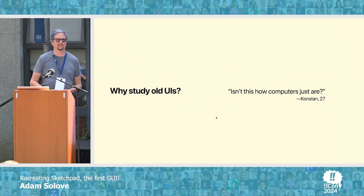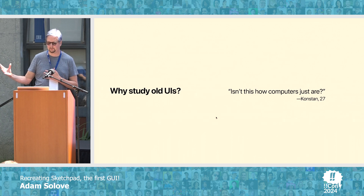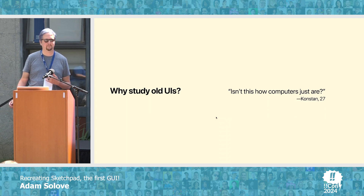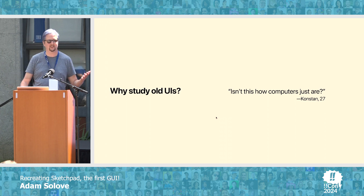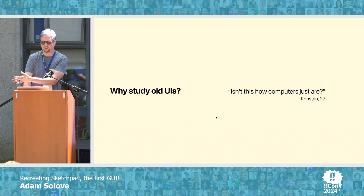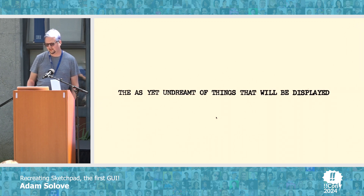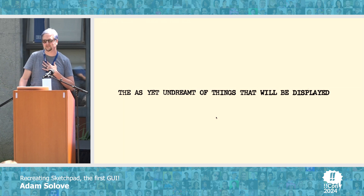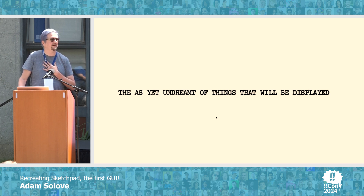I want to leave you with some thoughts on why we should study old UIs. One professor taught Sketchpad in an intro course and some students came up afterwards and said, "what's so cool about that? Isn't that just what computers are?" But not everything about the world of computing we work in is contingent — it's a decision that somebody made. They might've made it right or wrong. The ones that survived to today might've been the good ones or the bad ones. It's worth studying the old things to find out which historical mistakes or historical precedents are worth revisiting. Finally, I love the complete optimism of people who are doing something for the first time. This is one of the section headings in Sutherland's dissertation — and if I were going to get a tattoo, this is what I'd get: "the as yet undreamt of things that will be displayed." Even today, 61 years later, there are still undreamt of things yet to be displayed. And that's what I like doing. Thank you.